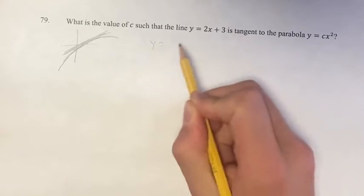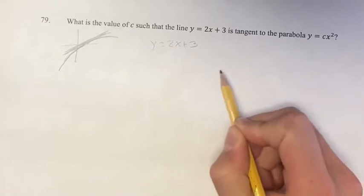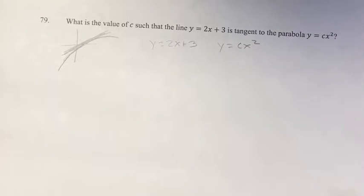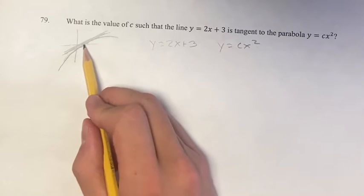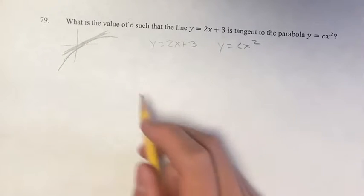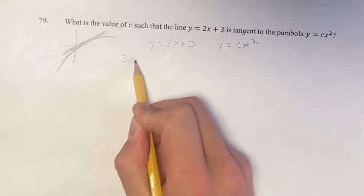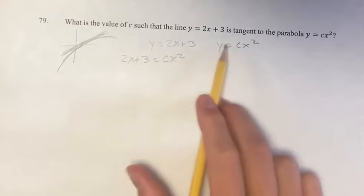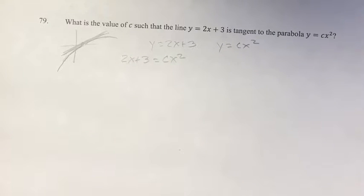So firstly, we have y = 2x + 3 and y = cx². Using this, since we know that they're going to be equal at some point, we can say at that point, 2x + 3 = cx², because at that point they have the same y value.